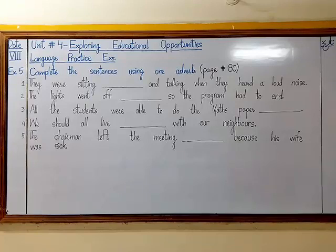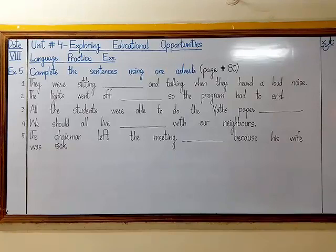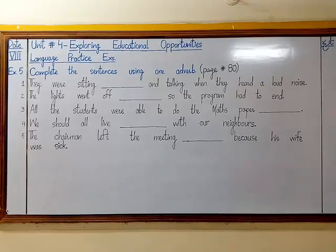Examples of the e-drop rule: true → truly, simple → simply, gentle → gently, comfortable → comfortably, possible → possibly, idle → idly. This list is given in exercise number 4. The last rule is: for all other adjectives that do not end in -y or -e, you simply add -ly directly to make the adverb.